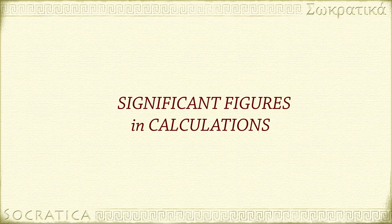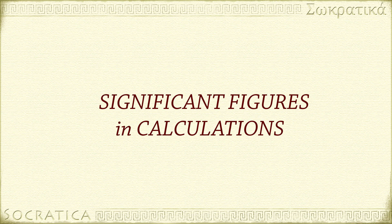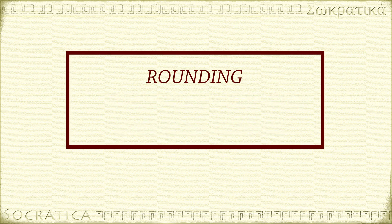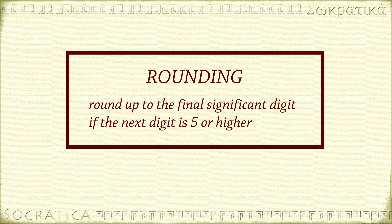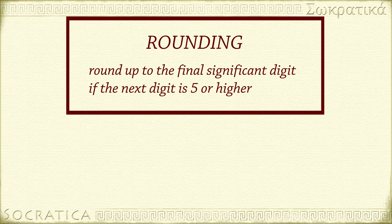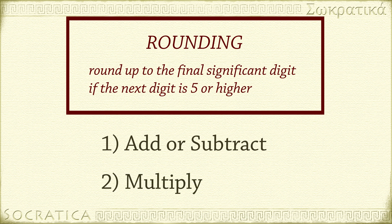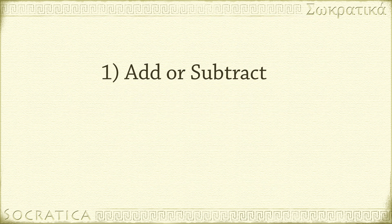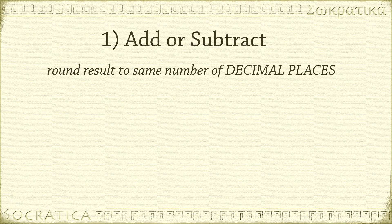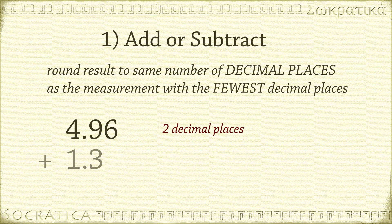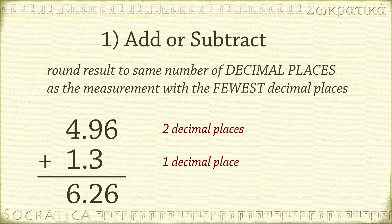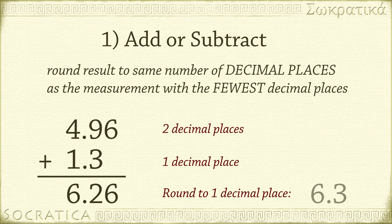Let's discuss how to deal with significant figures when doing calculations. At the very end of a calculation, you round up to the final significant digit only if the next digit is 5 or higher. When you add or subtract, you round the result to the same number of decimal places as the measurement with the fewest decimal places. For example, 4.96 + 1.3 = 6.26, but you round to 1 decimal place — the same as in 1.3 — so your answer is 6.3, rounding up because 6 is greater than or equal to 5.